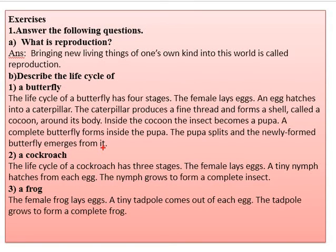So this is the female. The female lays eggs first. The egg hatches and a caterpillar comes out. The caterpillar makes a fine thread, a shell — a cover around its surroundings — and it's called a cocoon. Inside the cocoon the insect is in pupa form. After that, the butterfly forms inside the pupa. The pupa splits and breaks down, and the butterfly comes out from it.